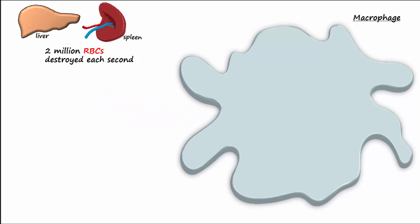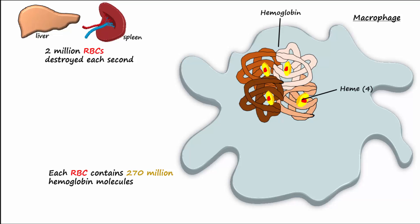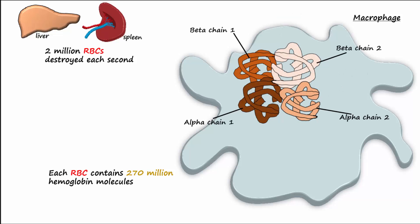Each erythrocyte contains approximately 270 million hemoglobin molecules, each consisting of four heme molecules and four globin polypeptide chains. Of the globin chains, two are alpha chains and two are beta. These globin polypeptide chains are broken down into individual amino acids inside the macrophage and can be used again to make new proteins.